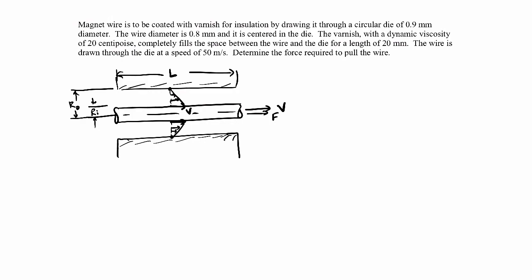In reality the profile isn't exactly linear, but it's pretty close. We'll set up a coordinate system: the radial direction and the x direction. The fluid, the varnish, resists the motion of the wire through viscosity — viscous stresses arise when you have a velocity gradient. We're going to have to overcome those viscous stresses. The force we have to apply equals the total viscous force resisting our movement, which will be the shear stress acting on the wire.